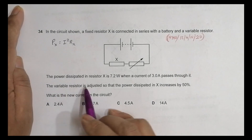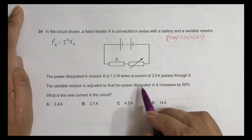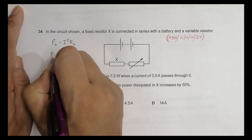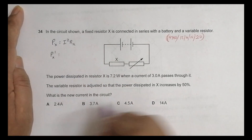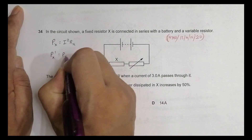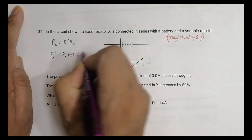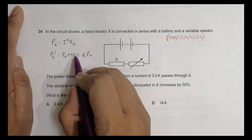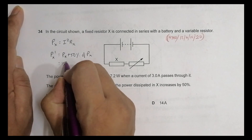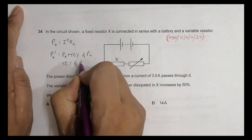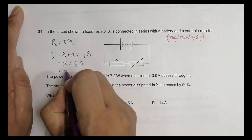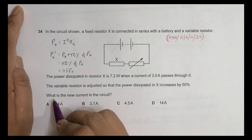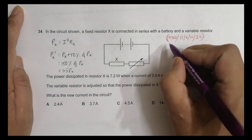Now the variable resistor is adjusted so that the power dissipated in X increases by 50%. The new power in X, which I write as P_X prime, is equal to P_X plus 50% of P_X. That is 150% of P_X, which equals 1.5 P_X. So the new power is 1.5 P_X. We have to find the new current in the circuit.